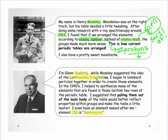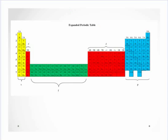What Seaborg did is he developed the idea of the two periods called the lanthanides and actinides. He synthesized most of those elements, and not only that, he suggested pulling them out of the main body of the periodic table. People thought he was a bit crazy when he suggested this, but it really makes a lot of sense — and it's also a lot easier to fit the whole periodic table onto one piece of paper.